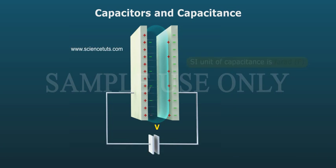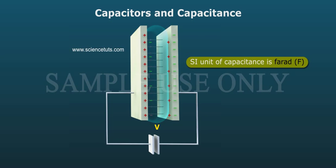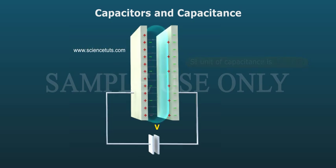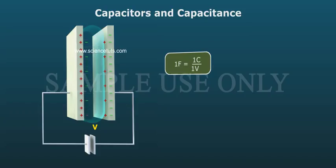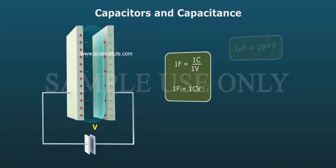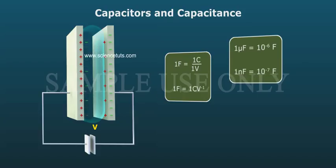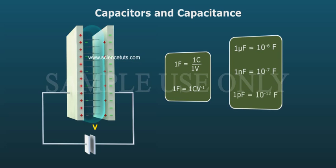SI unit of capacitance is Farad F. 1F equals 1C by 1V. 1F equals 1C V inverse. 1μF equals 10 power minus 6F. 1NF equals 10 power minus 7F. 1PF equals 10 power minus 12F.